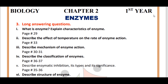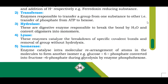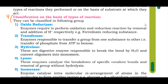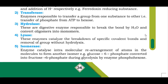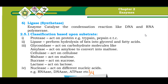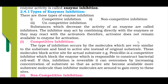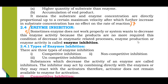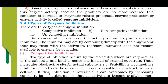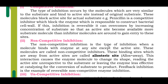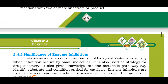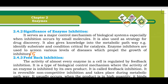Question four: Describe the classification of enzymes. This is on pages 36 and 37. On page 36, there is classification on the basis of types of reaction — five classifications are given. There is also classification based upon substrate. Both classifications need to be written. Question five: Describe enzymatic inhibition, its types, and its significance. This is on pages 35 to 36, covering competitive inhibition, non-competitive inhibition, uncompetitive inhibition, and significance of enzyme inhibition.